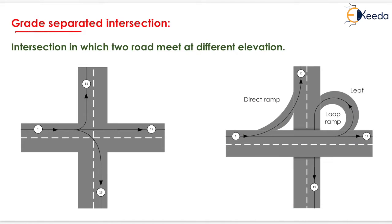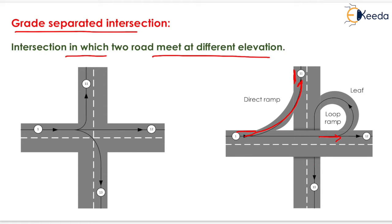The first type is grade separated intersection, where two roads meet at different elevations. In this arrangement, one road is above the other. If we have to travel from the upper road to the bottom road, we use the direct ramp. If we have to merge from upper traffic to the bottom road traffic, we use the loop ramp.